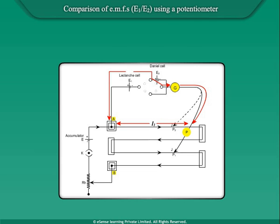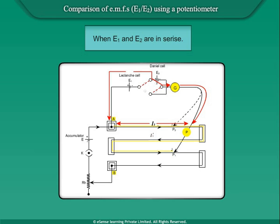For the sum and difference method, we use this circuit diagram. When the negative of E1 is connected to the positive of E2, the cells are in series, that is, sum.